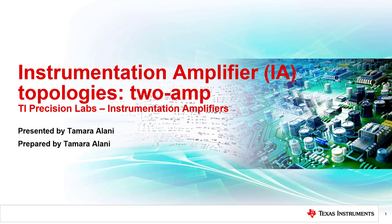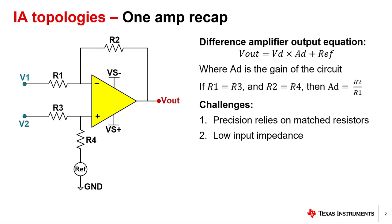Hello, and welcome to the lecture for the TI Precision Lab discussing instrumentation amplifier topologies, specifically 2-amp IAs. In a previous lecture, we discussed and derived the 1-amp IA, commonly known as a difference amplifier. While this IA topology satisfies the two main characteristics of an idealized IA, it does have its own drawbacks. This IA topology heavily relies on matched resistors and it has low input impedance.